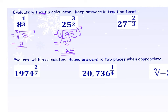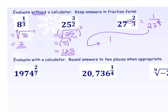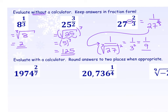For 27 to the negative 2 thirds: negative means we take the reciprocal of 27 right away. That makes the negative 2 thirds become positive 2 thirds, giving 1 over 27 to the 2 thirds. Converting to radical form — it's still in a fraction, so keep 1 over — the cubed root of 27 is 3, and 3 squared is 9. The answer is 1 ninth. Notice 9 is smaller than 27, consistent with the exponent 2/3 being less than 1.